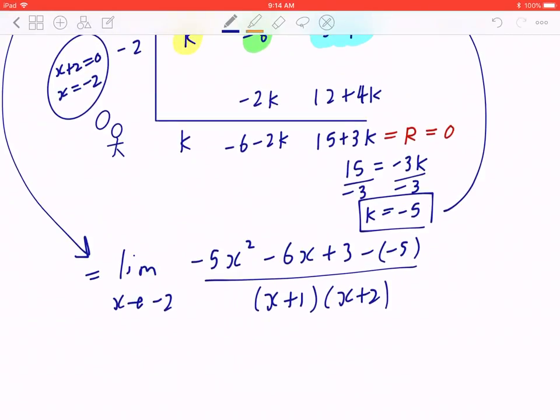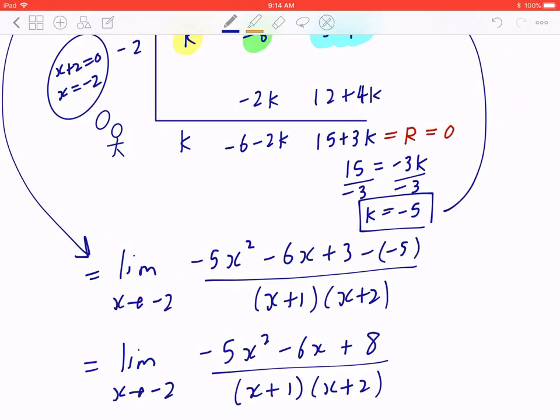So what this means is if you collect like terms, you're going to get the limit as x is approaching -2. If you look at the numerator, that's going to be -5x² - 6x. 3 minus negative 5 is going to be positive 8 divided by, and again, you're copying the denominator as is.